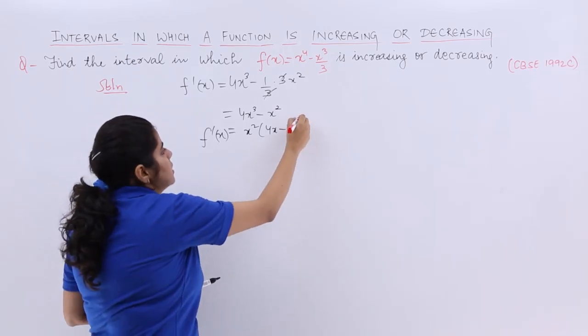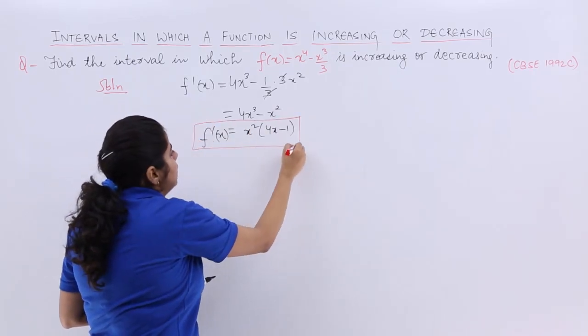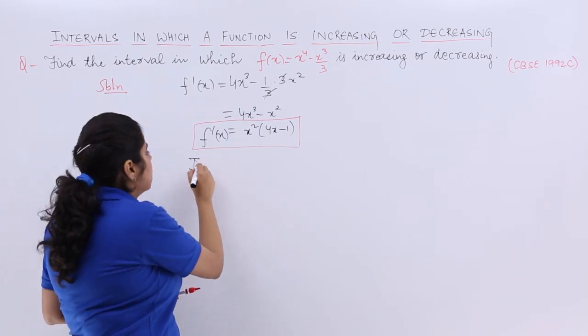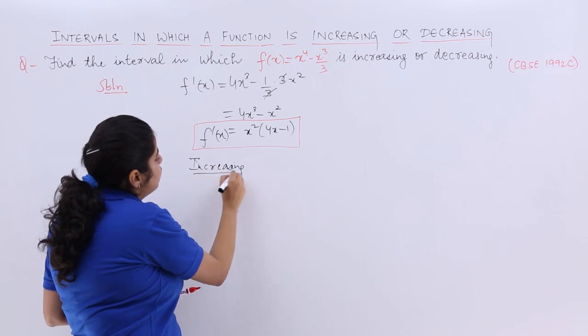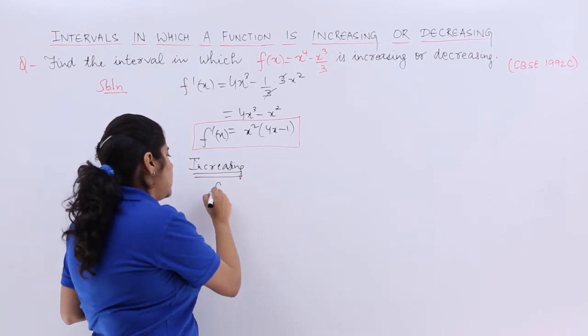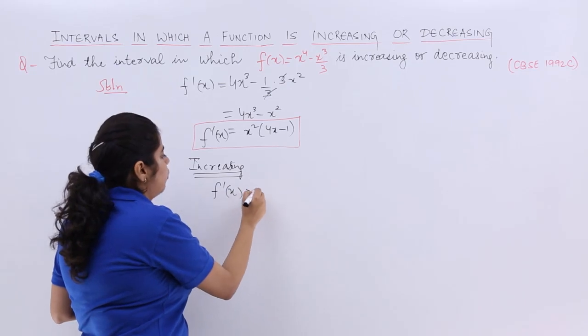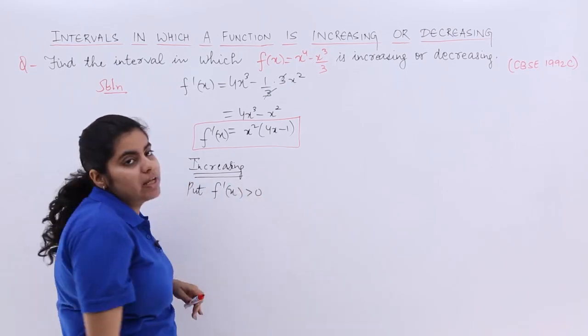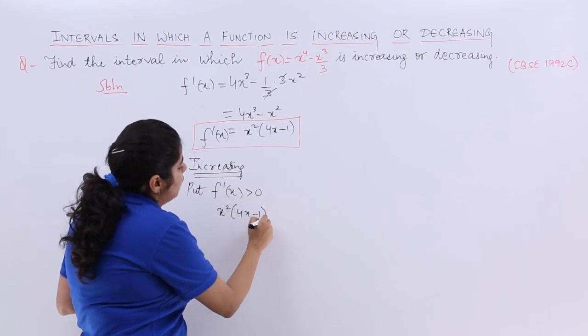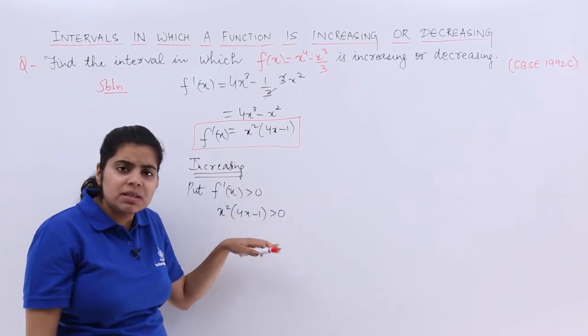Finding f'(x) because already the question was given as f(x). Now for increasing, let's give the heading as increasing. What are we supposed to do? Simply put f'(x) > 0. I write put f'(x) > 0, which is x^2(4x - 1) > 0.